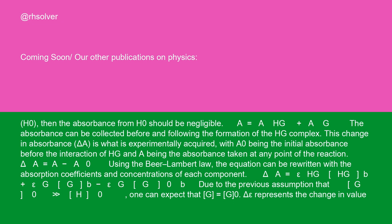A equals AHG plus AG. The absorbance can be collected before and following the formation of the HG complex. This change in absorbance, delta A, is what is experimentally acquired, with A0 being the initial absorbance before the interaction of HG and A being the absorbance taken at any point of the reaction. Delta A equals A minus A0. Using the Beer-Lambert Law, the equation can be rewritten with the absorption coefficients and concentrations of each component. Delta A equals epsilon HG times HG times b plus epsilon G times G times b minus epsilon G times HG times b, due to the previous assumption that G0 is much greater than H0.